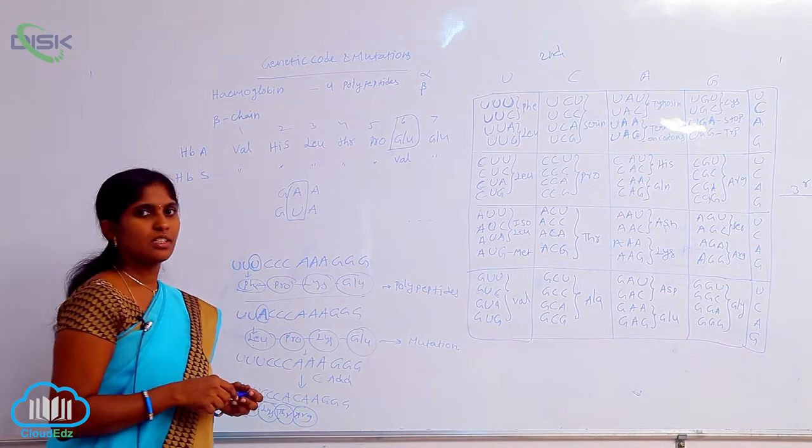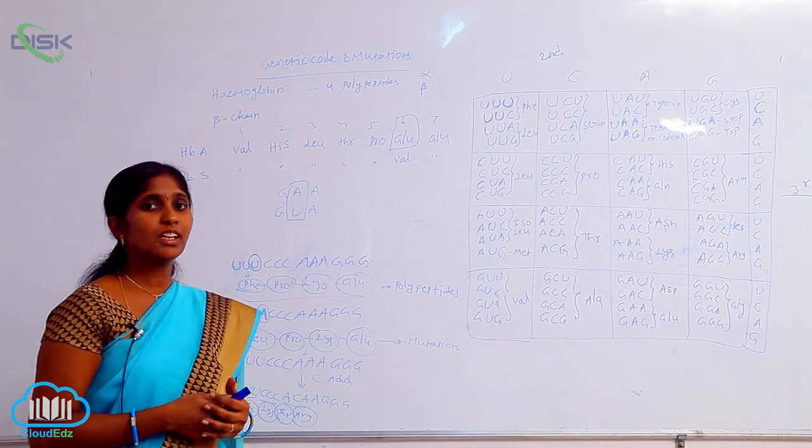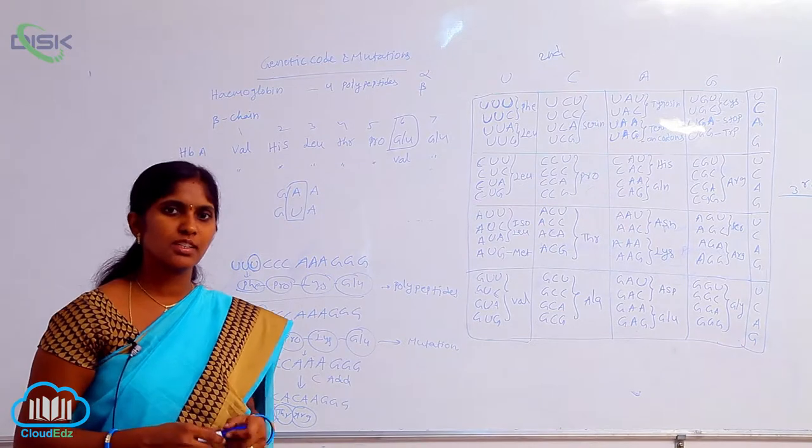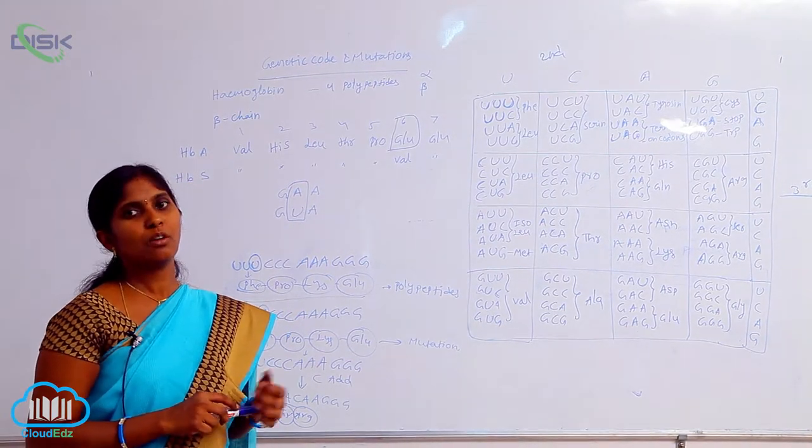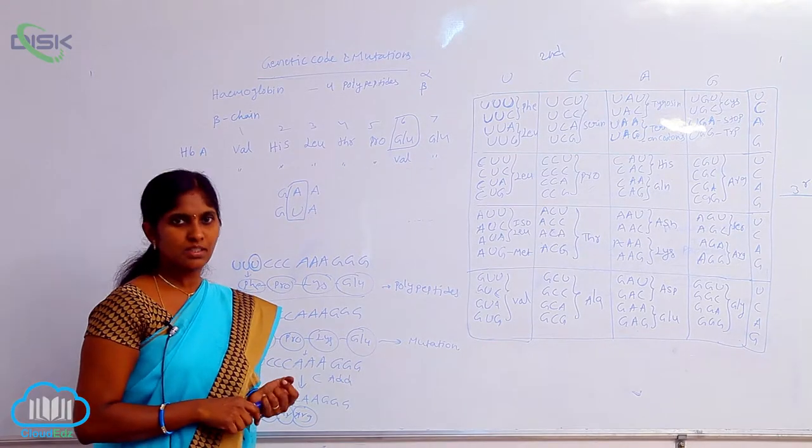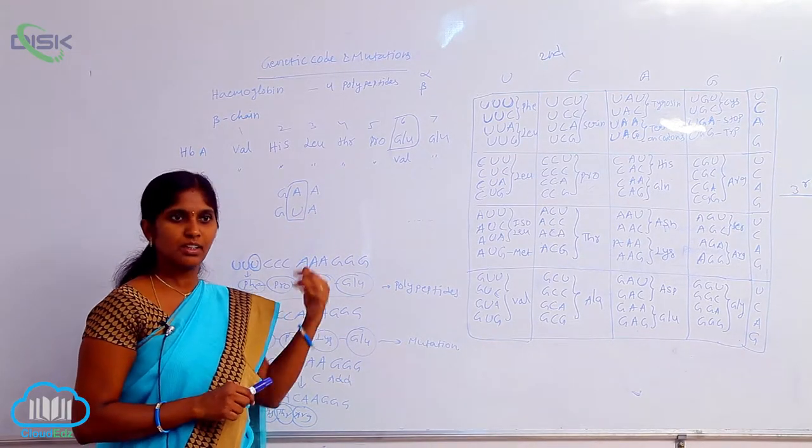So in human beings, this causes anemia, sickle cell anemia. How is the sickle cell anemia disease caused? This is the best example for the alteration of base pairs, the alteration of genetic code that leads to mutation.